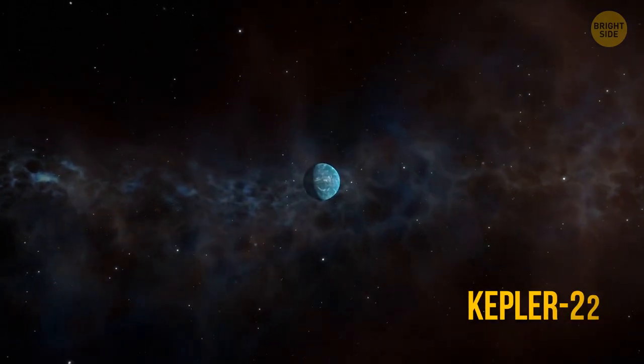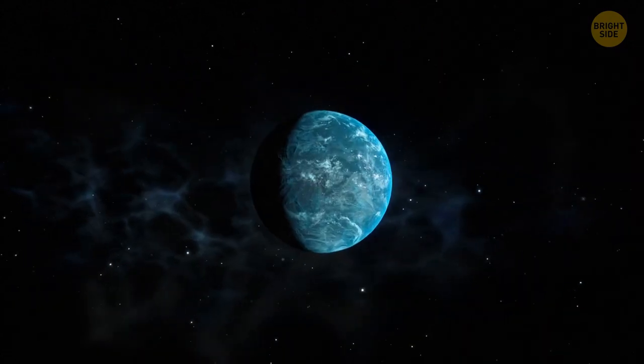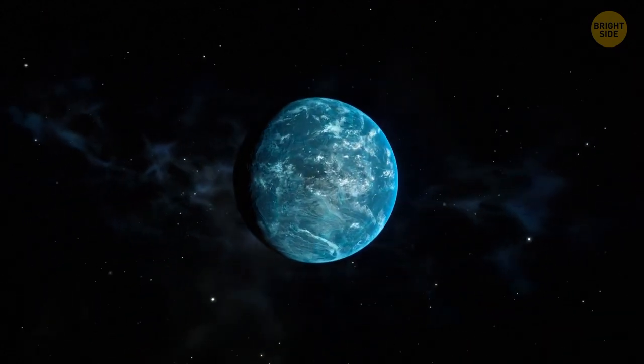We've discovered Kepler-22b, a small exoplanet in the Cygnus constellation. Seems like nothing important, right? But it's actually a big deal.